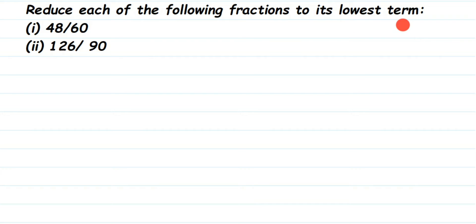The normal way is to use the HCF — Highest Common Factor — of both numbers and divide by it. The first question is 48 by 60. I'm going to find out the Highest Common Factor of 48 and 60.